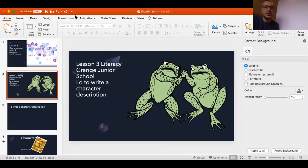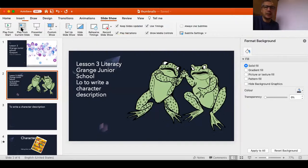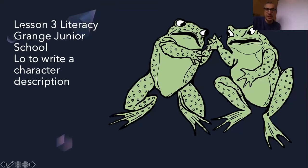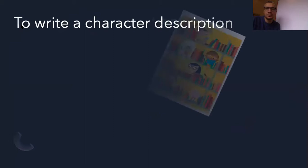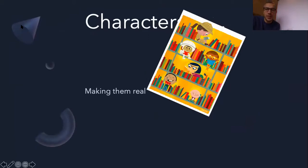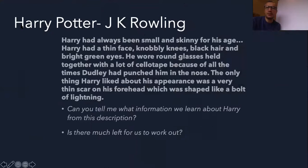We're looking at writing a character description today — we want to try and make them real people. I'm going to read you a couple from some famous authors and then show you how I would write one myself. So firstly, we've got Harry Potter written by JK Rowling: 'Harry had always been small and skinny for his age. Harry had a thin face, knobbly knees, black hair, and bright green eyes. He wore round glasses held together with a lot of sellotape because of all the times Dudley had punched him in the nose.'